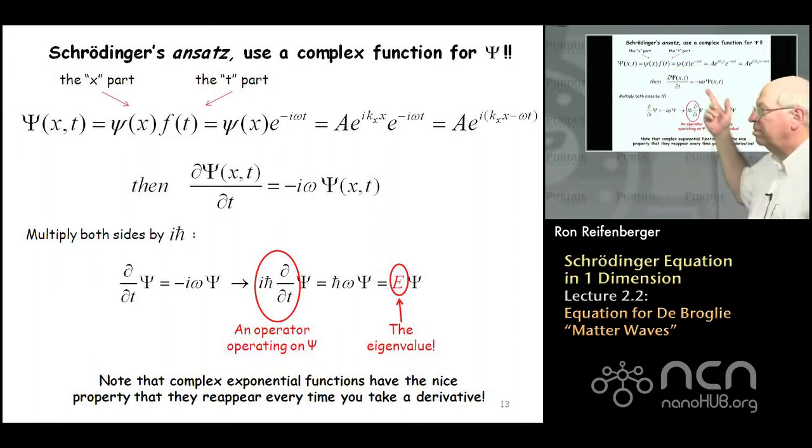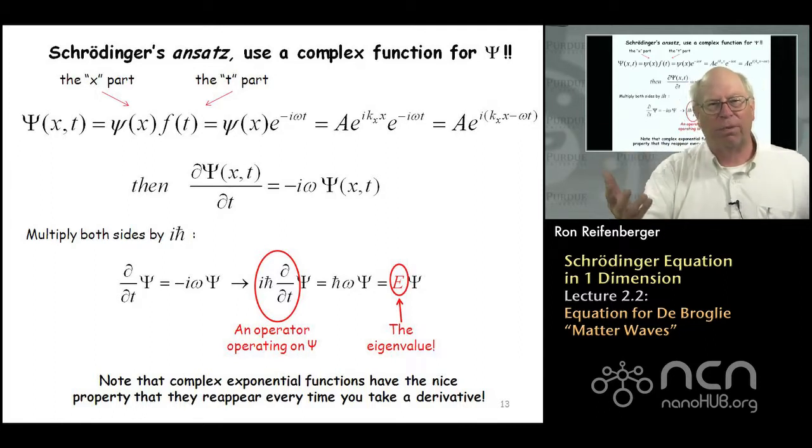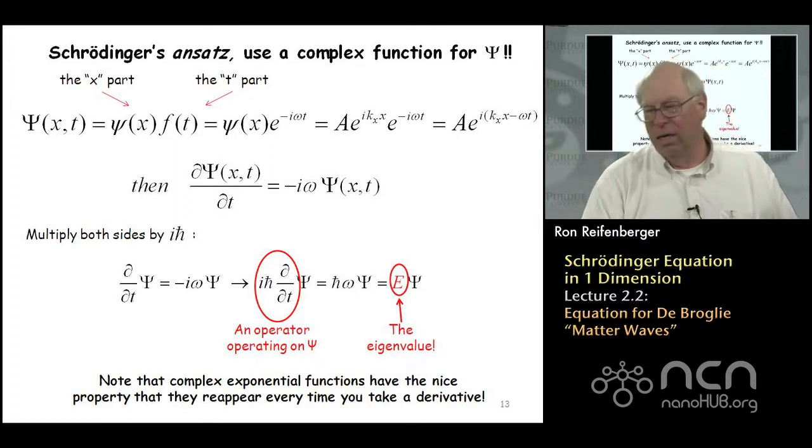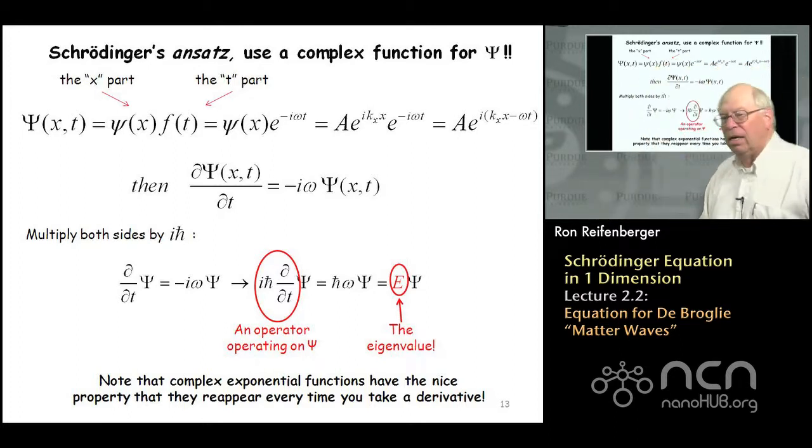So does that equation for ψ satisfy this time dependent equation, this time dependent eigenvalue equation? Well, you can take the derivative of this with respect to time. That's easy to do. You get this -iω out in front. You get the wave function back again. Because every time you take a derivative of an exponential function, you always get that exponential function back again. That's one of the beauties of the exponential.